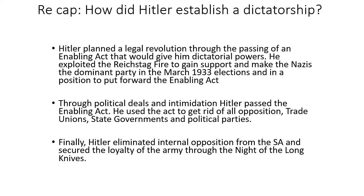So if you remember, there were a couple of stages. Hitler planned a legal revolution through the passing of an Enabling Act that would give him dictatorial powers. He exploited the Reichstag fire to give him support and make the Nazis the dominant party in the March 1933 elections, and into a position to put forward the Enabling Act. And then through political deals and intimidation, Hitler passed the Enabling Act. He used the act to get rid of all external opposition — trade unions, state governments and political parties — all were now gone.